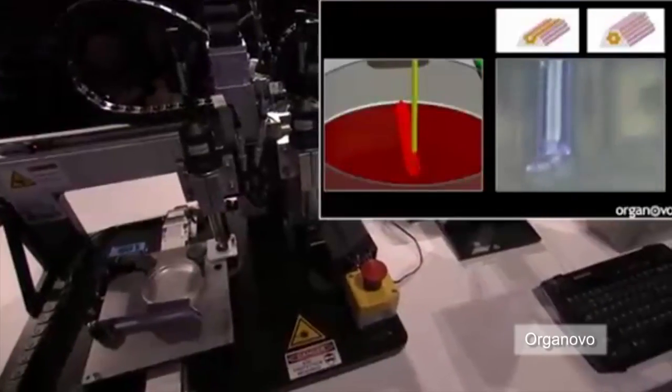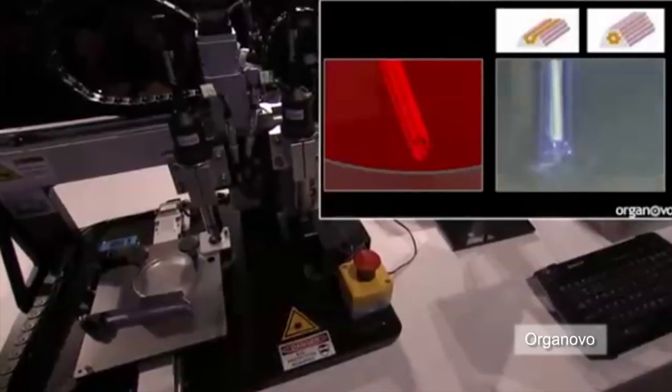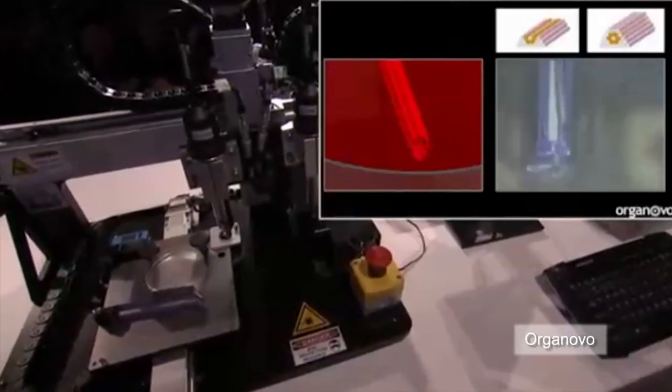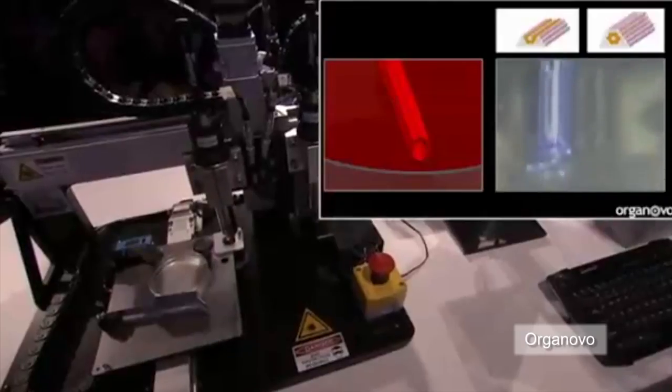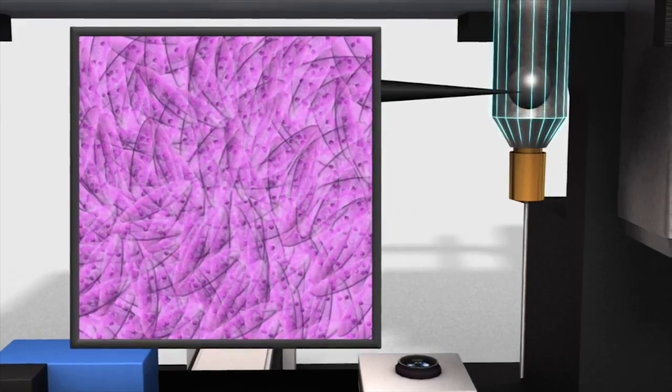San Diego-based company Organovo has developed a bio-printer that is making strips of liver tissue that could be used to test new drugs before they're administered to humans. One of the two printer syringes is filled with spheroids containing parenchymal liver cells, which are used to assess the potential toxicity or efficacy of drugs.